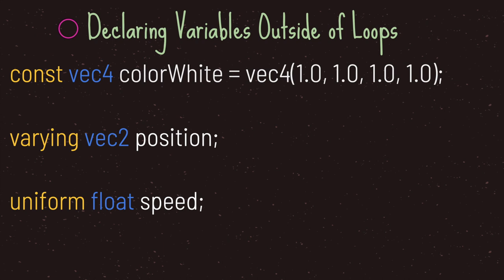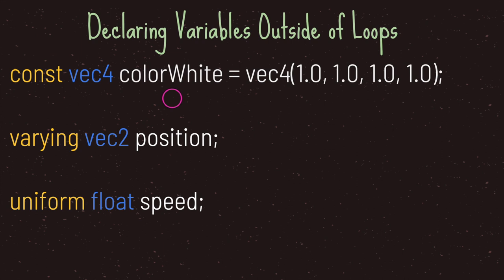In the first example I want to create a color variable that holds a vec4 data type. I declare the initialization type — constant — followed by the data type vec4, followed by the variable name color_white. I then assign it vec4 with all values at 1.0, because I'd like the color white to be used in the fragment loop. You can do the same thing for the other initialization types.